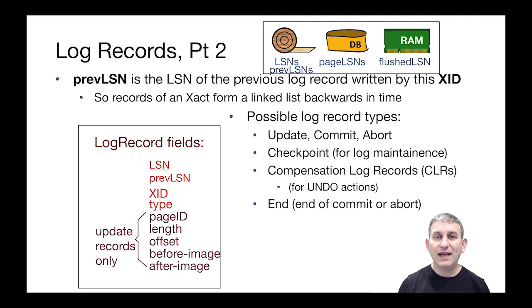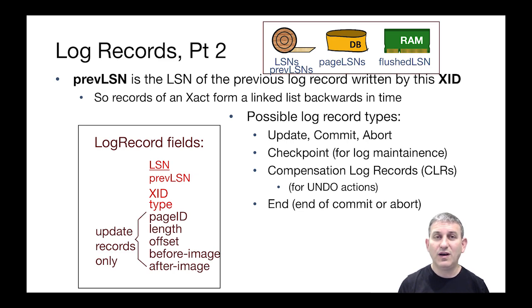When we look at a typical log record in ARIES, it's going to have an LSN, which is the log sequence number — every log record has an increasing LSN. It's going to have a PREVLSN to link it to other log records for this transaction, and it's going to have a transaction ID. Those three things are going to determine where that log record is in the log and how it connects to other log records for its transaction.